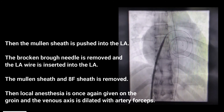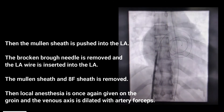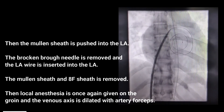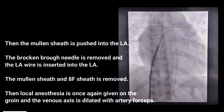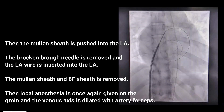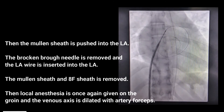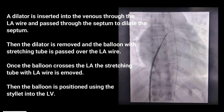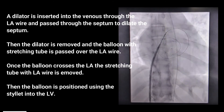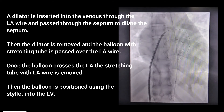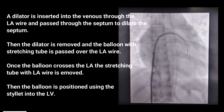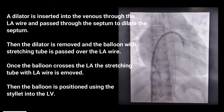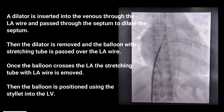The Mullin sheath is pushed into the left atrium (LA) and the Brockenbrough needle is removed. The LA wire is inserted into the LA, and the Mullin sheath and 8F sheath are removed. Local anesthesia is given again on the groin, the venous access is dilated with artery forceps, and a dilator is inserted through the LA wire, passed through the septum to dilate it. The dilator is then removed.